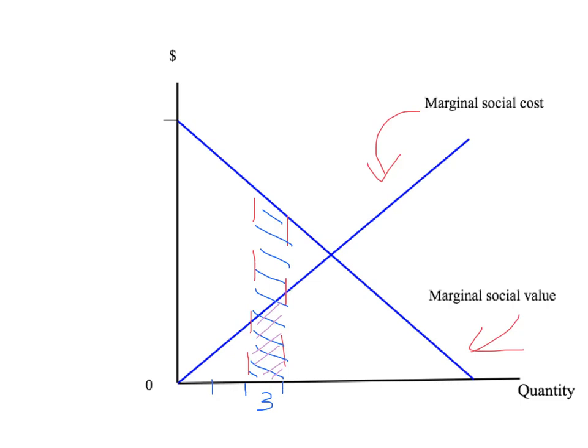So what's the net gain to society when the third unit of output is produced and consumed? It's the marginal social value — the height of the marginal social value curve — minus the marginal social cost — the height of the marginal social cost curve. Our social gain from this third unit is simply the difference: the area between the marginal social value and the marginal social cost for the third unit.